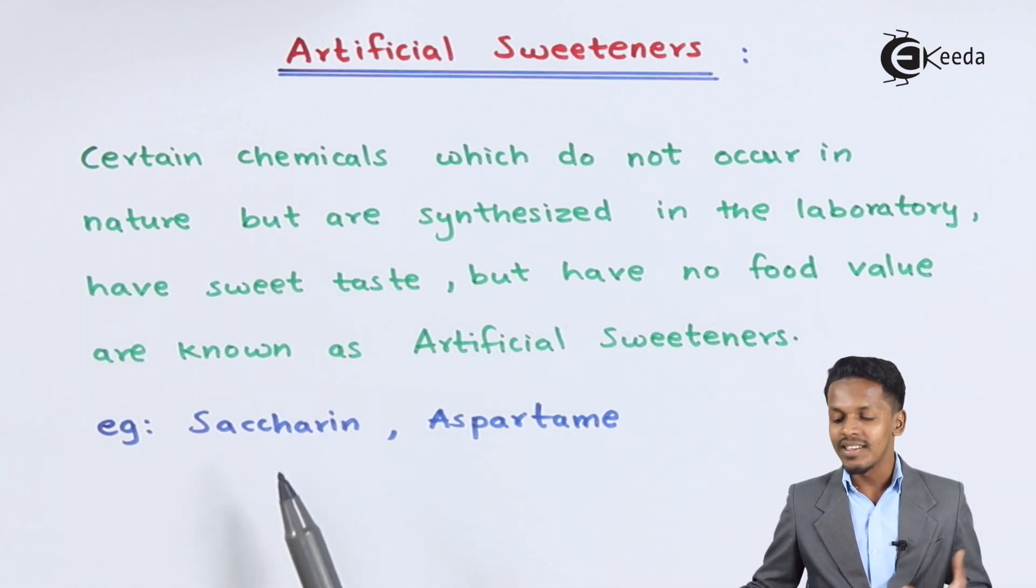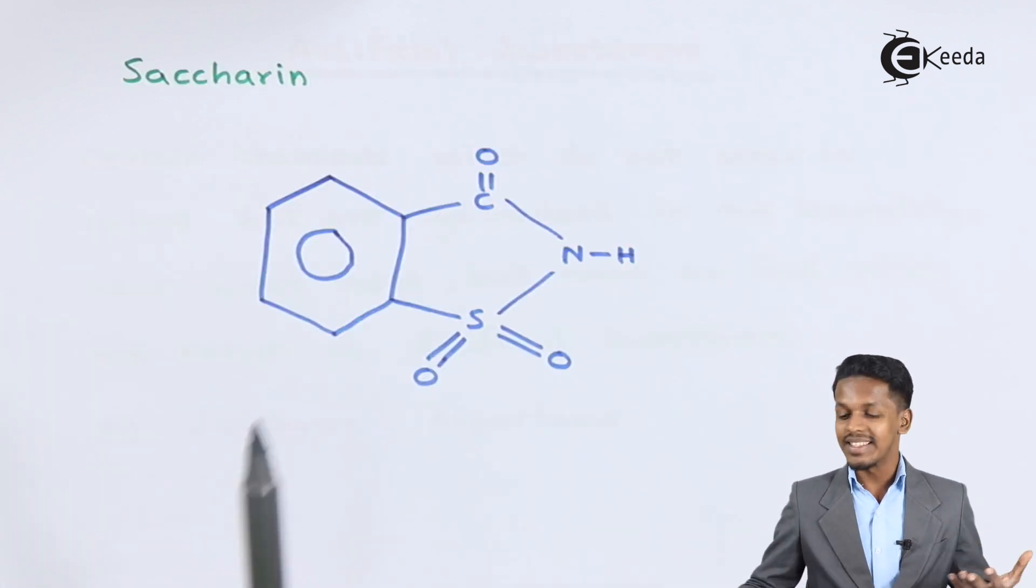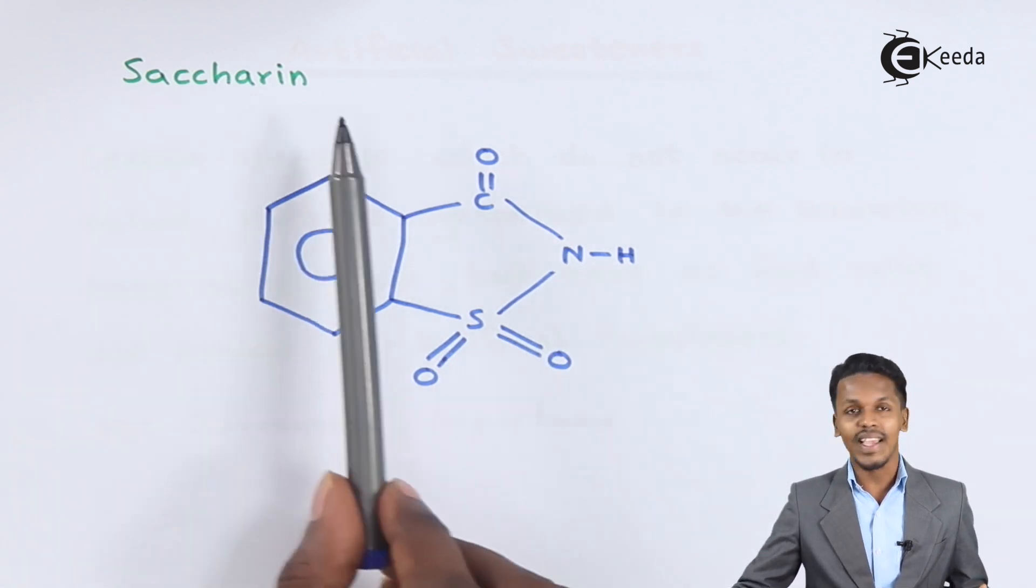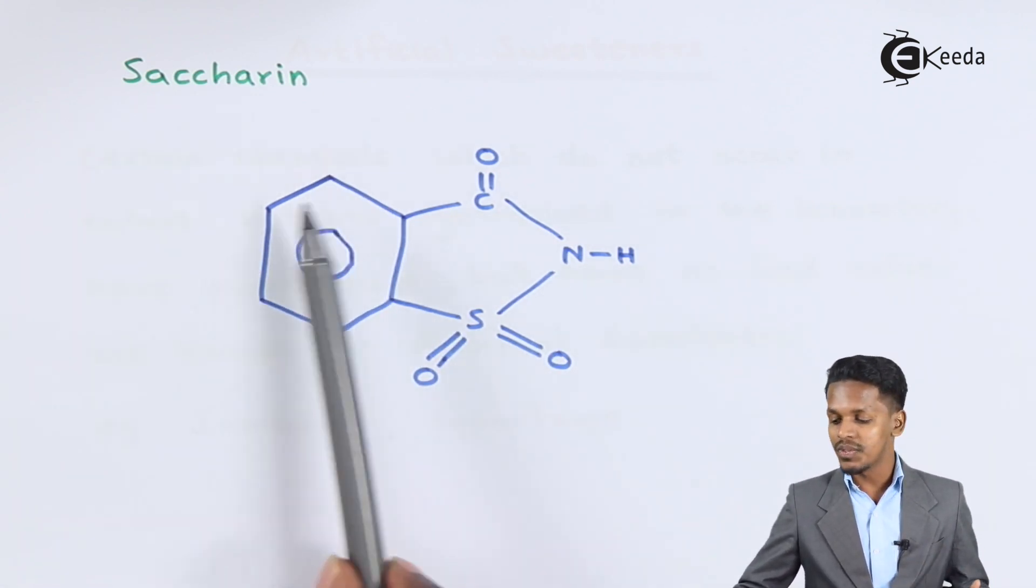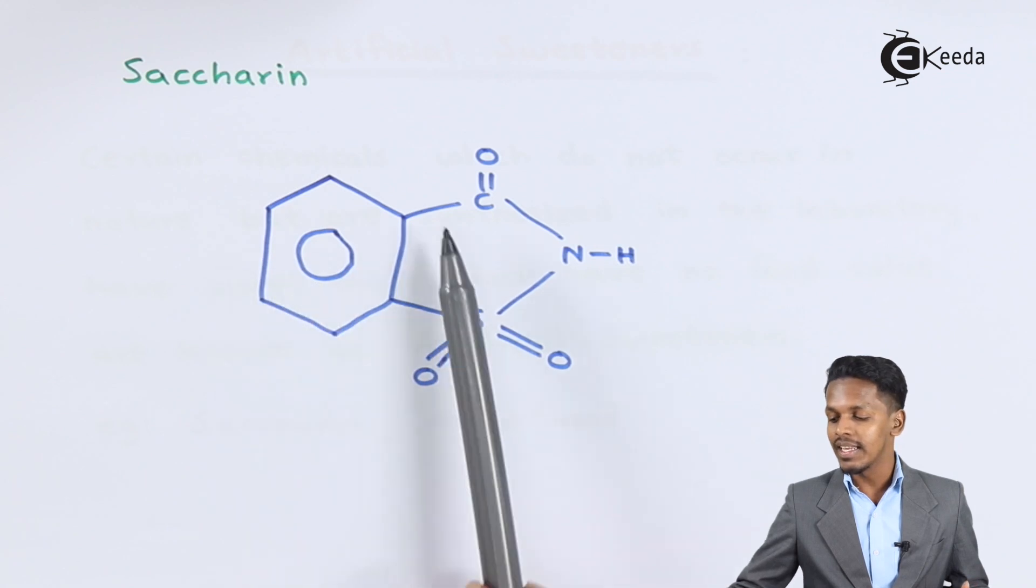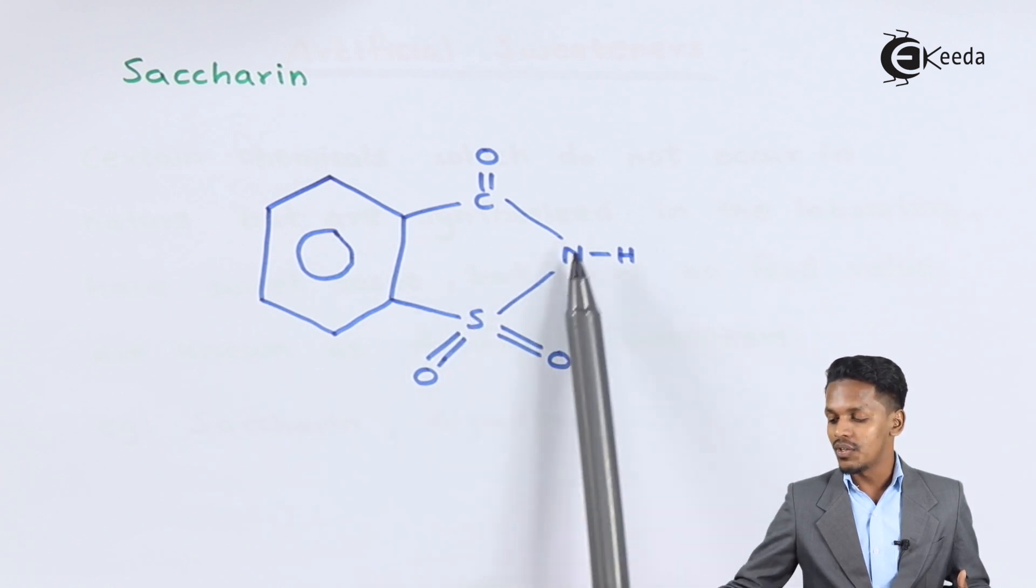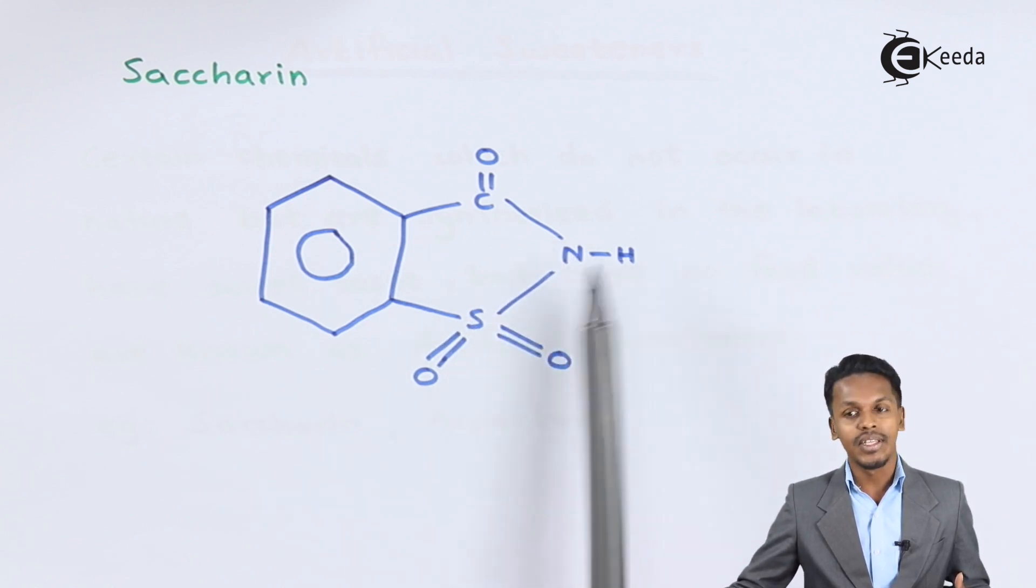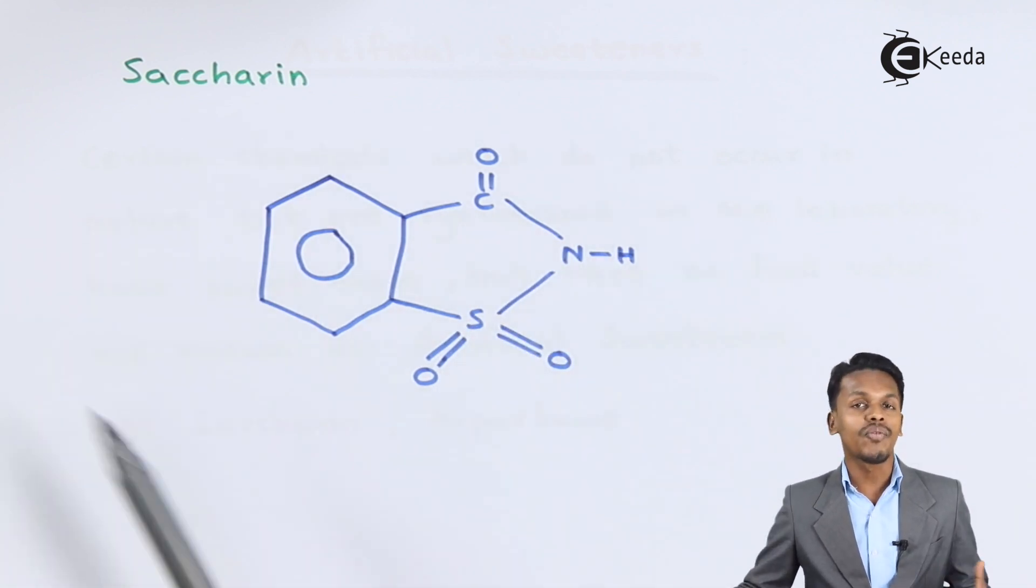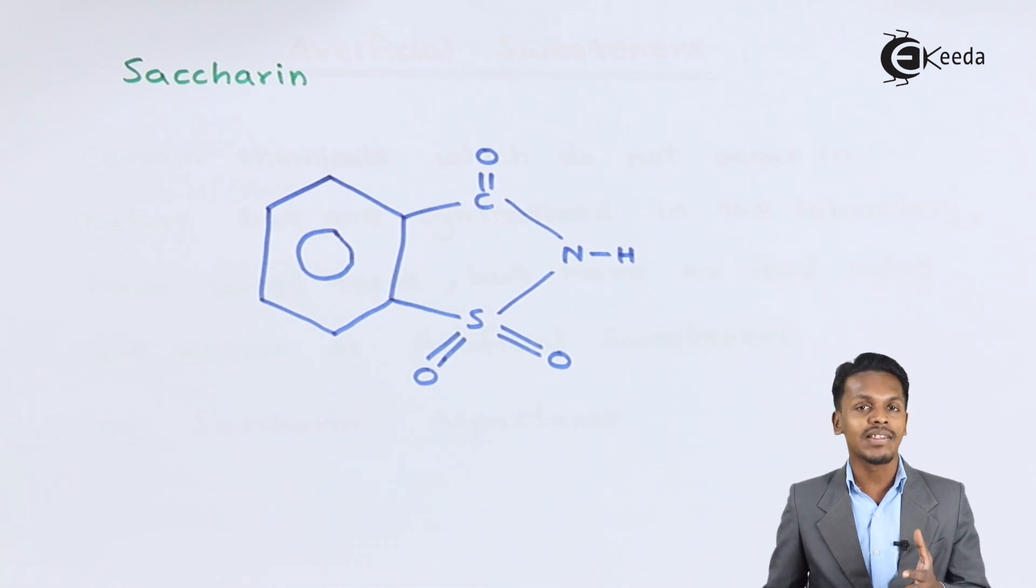The examples are saccharin and aspartame. Based on that, we have the structures related to saccharin and aspartame. This is the structural formula for saccharin. It consists of a benzene ring which is attached to C double bond O, and this is a thionyl group, S double bond O, and again S double bond O which is attached to NH.